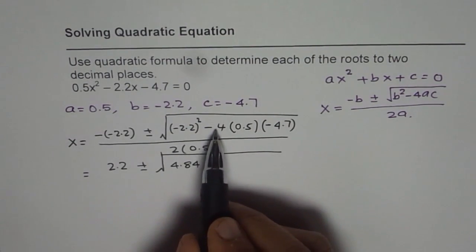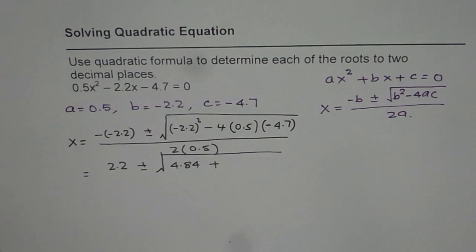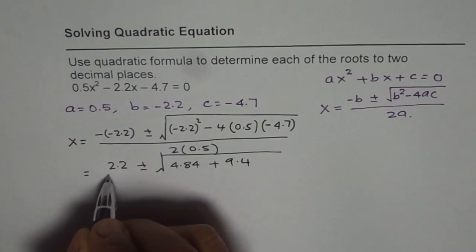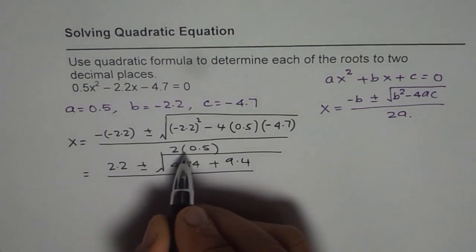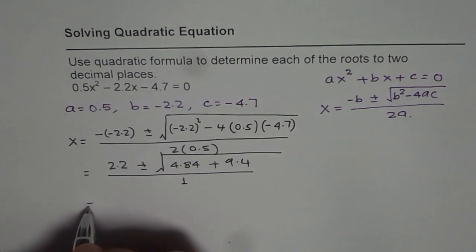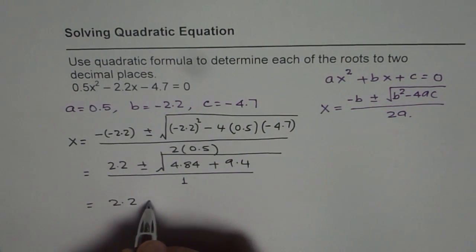So we have 4 times 0.5 times 4.7 equals 9.4, divided by 2 times 0.5 which is 1. So we can now write this as 2.2 ± √(...) over 1.